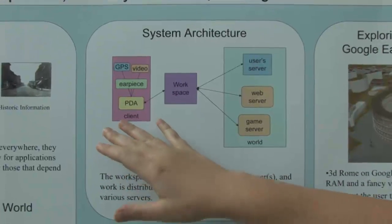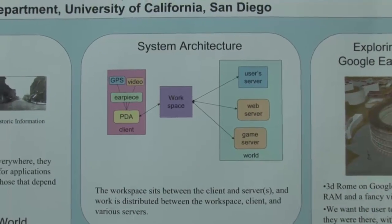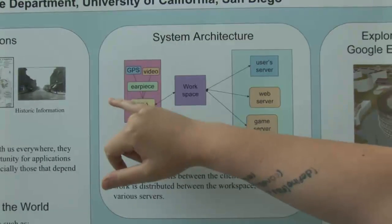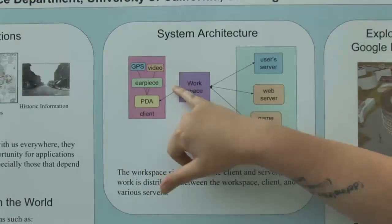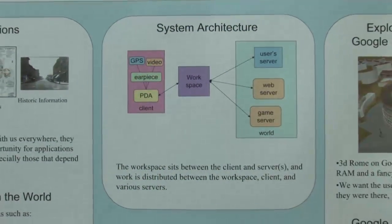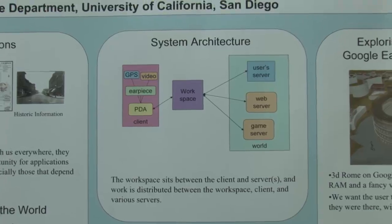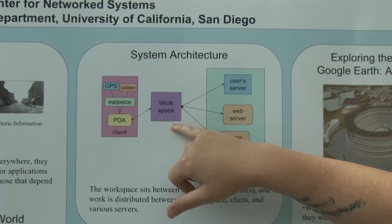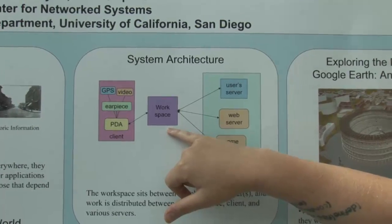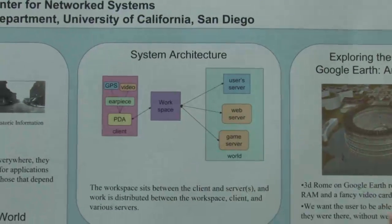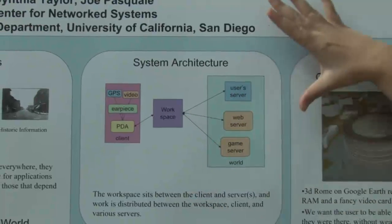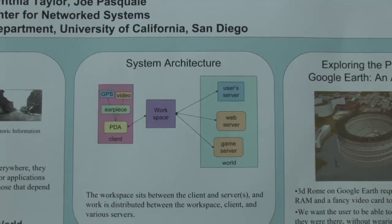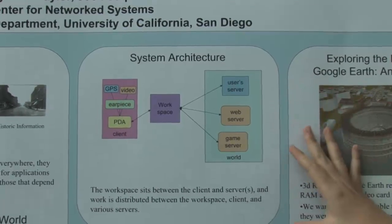Here we have a client that can be a loose collection of input devices and output devices — for example, GPS, video, and an earpiece — all collated by a PDA that groups all the input and output and controls sending it back and forth. And we have our workspace, which is this very close-to-us server I've been discussing. We can run a subset of things on this workspace. And then out in the world, we have all of these potential servers — our own server, any web server, game server, any kind of computer we would normally interact with over the internet.